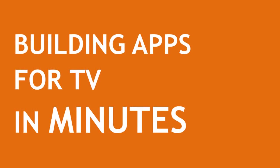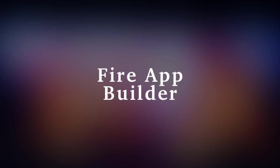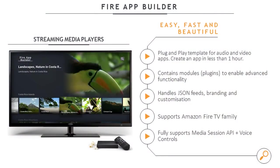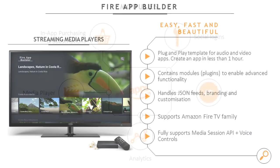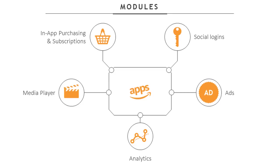However, at Amazon we want to enable you to build high-quality applications for Amazon Fire TV in just a few minutes. You can leverage the Amazon Fire App Builder — a plug-and-play template for audio and video applications that allows you to create an app in less than an hour. It handles JSON feeds, custom branding and customization, fully supports the Amazon Fire TV family, and fully integrates the Media Session API and voice controls we've seen in this tutorial — they work out of the box. Fire App Builder also provides modules for features like in-app purchasing, subscriptions, social login, advertisement, analytics, and custom media player. All of these are plug-and-play and you can swap them in and out depending on what you need.